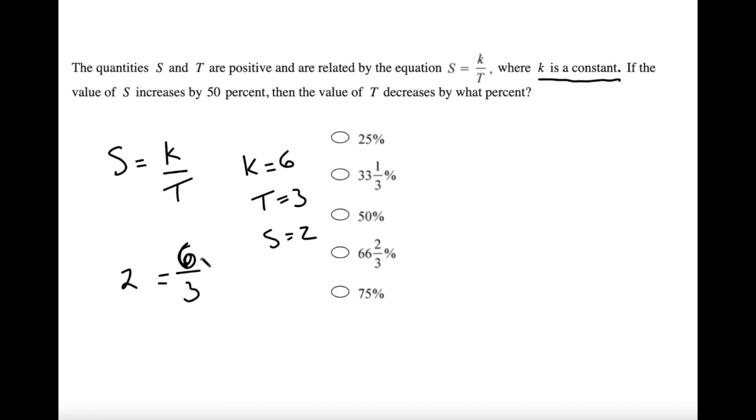So here's what we're going to do now. We're going to vary s and t. So let's increase s by 50%. Increase 2 by 50%. Well, what's 50% of 2? It's 1. So increase 2 by 1, that gives us 3.